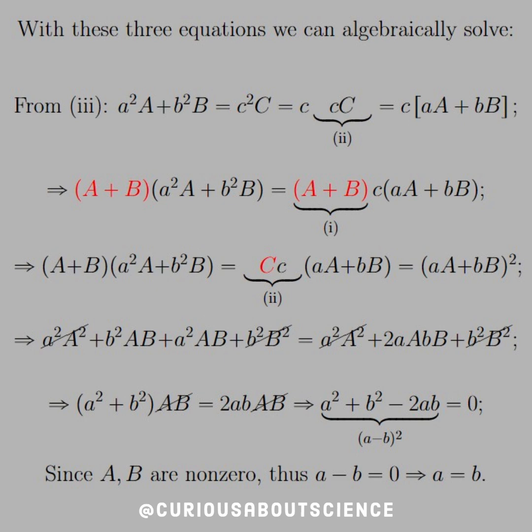We see that we have big A plus big B, times little a squared, big A, plus little b squared, big B, is equal to little a, big A, plus little b, big B, all squared. And now we can distribute.